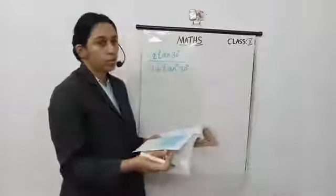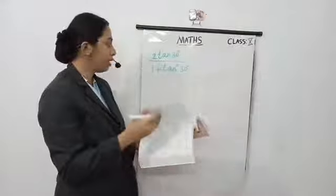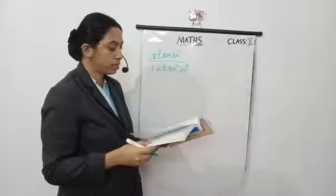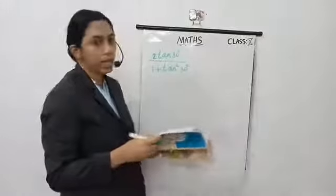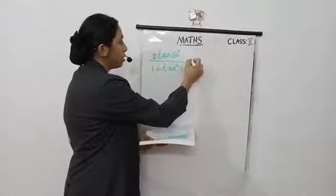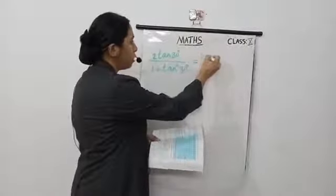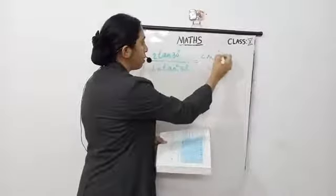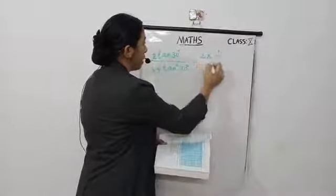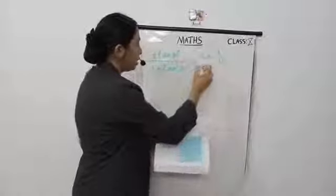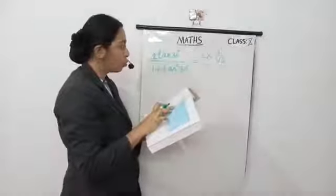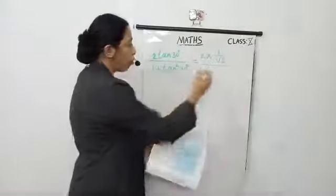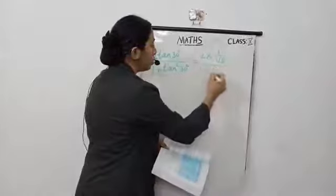First question: 2 tan 30° divided by 1 plus tan² 30°. So substitute the value of tan 30°. This is equal to 2 into tan 30° which is 1 by root 3, so 1 by root 3, divided by 1 plus tan² 30°. Tan squared 30° means 1 by root 3, all squared.